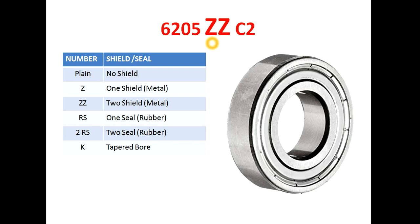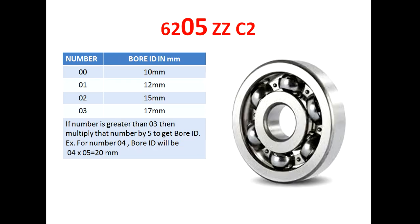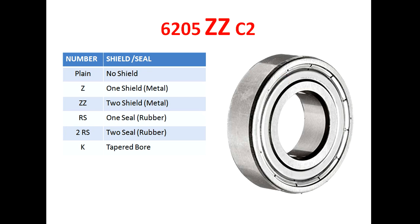The next digit indicates the shield or type of seal. If nothing is mentioned, it indicates no shield. If a single Z is mentioned, it indicates one metal shield on one side. If double Z is mentioned, it indicates metal shields on both sides. If RS is mentioned, it indicates one rubber seal on one side. If 2RS is mentioned, it indicates rubber seals on both sides. If K is mentioned, it indicates a tapered bore.